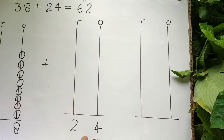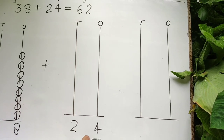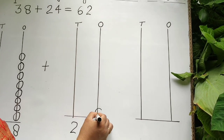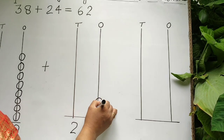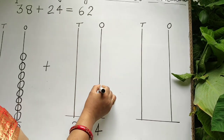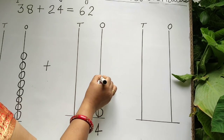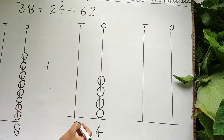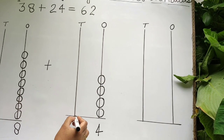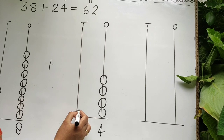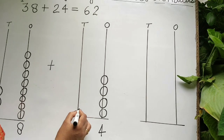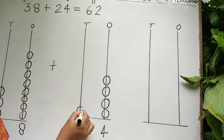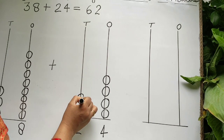Let's start to draw beads: one, two, three, four. And on the tens rod we will draw 2 beads: one, two.